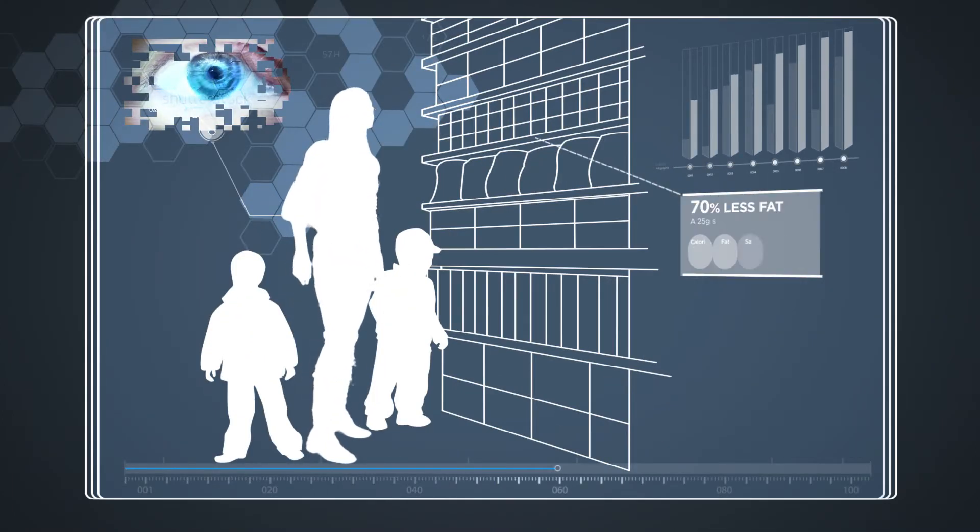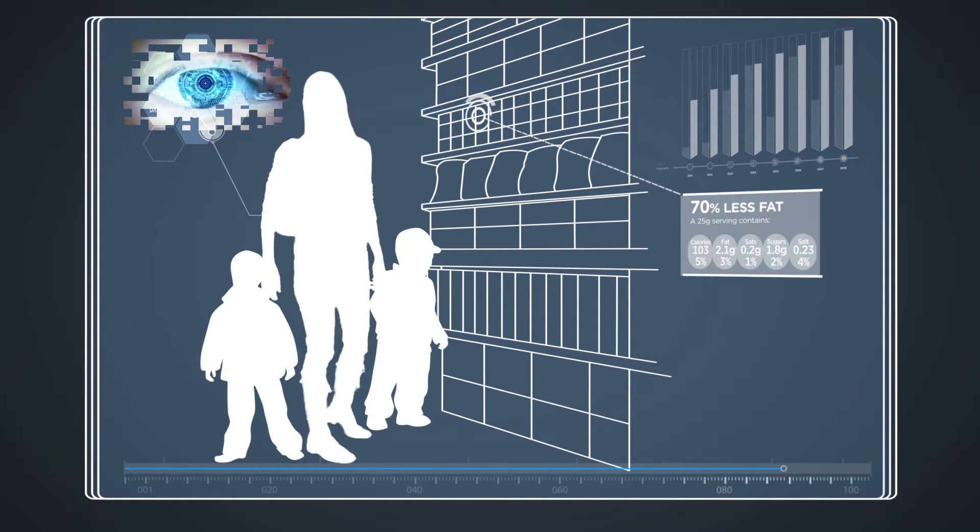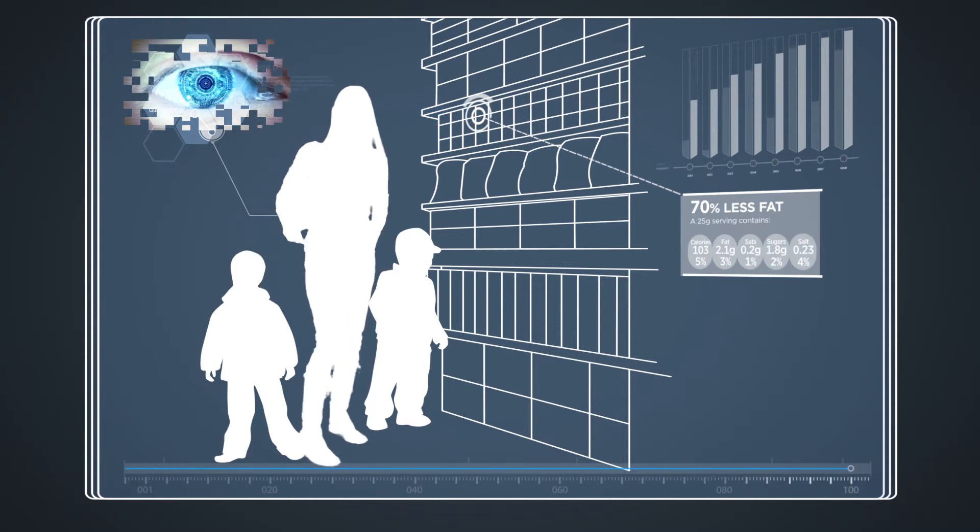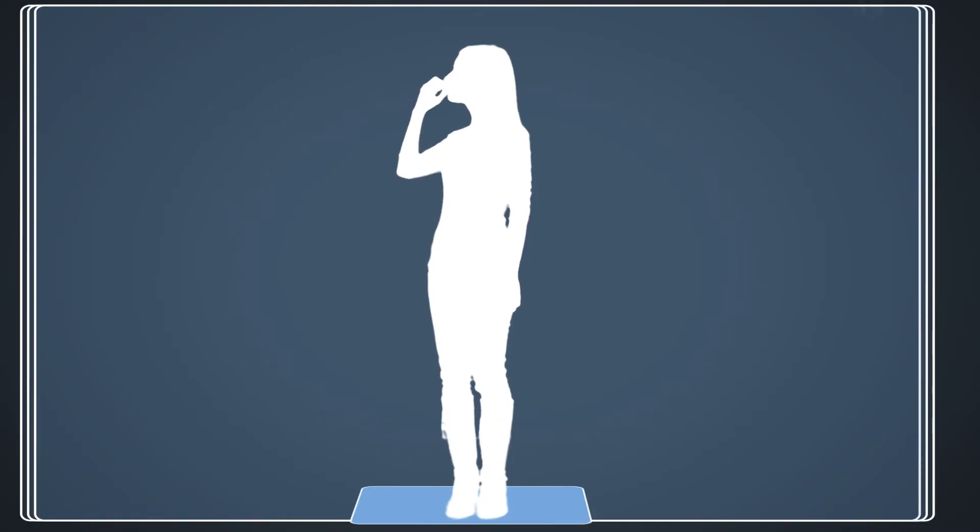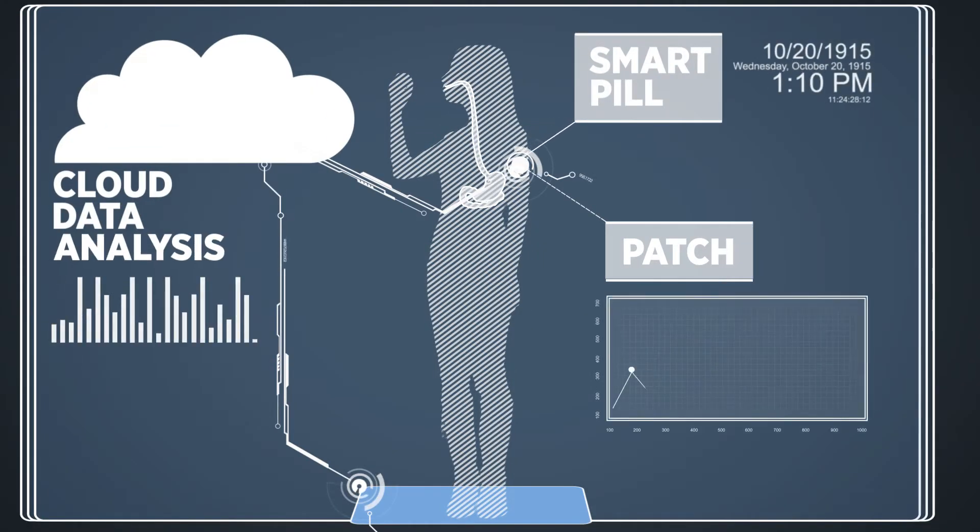Shopping became easier, my wearable technology would show me the best foods to buy and recommend healthier options for my kids. I was also sent reminders to take medication. I wear a patch that monitors my heartbeat, my glucose level, tracks my exercise and when I take my drugs.